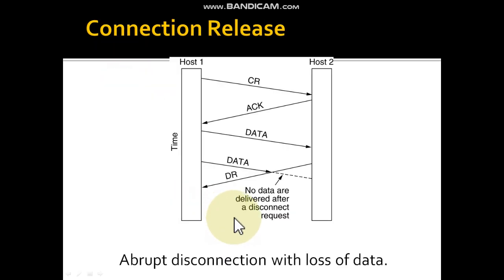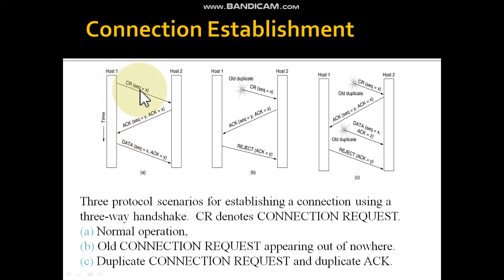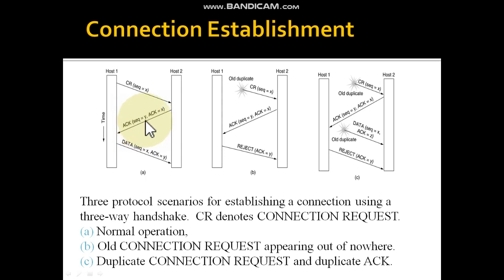This is the first diagram showing normal operation — how a normal connection is established. First, host 1 sends a connection request with sequence number X. Then host 2 sends sequence number Y. For example, if the sequence number is 8000, it will send X+1 as an acknowledgement, incrementing the sequence number by one.